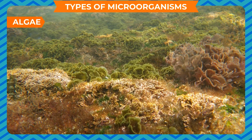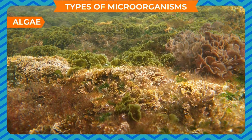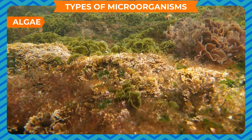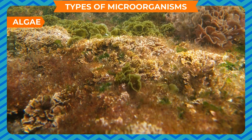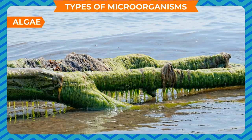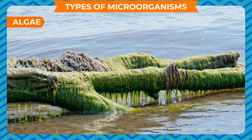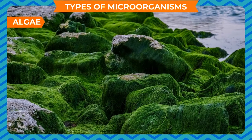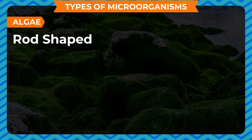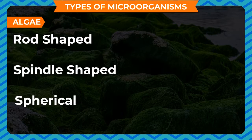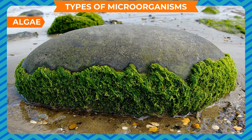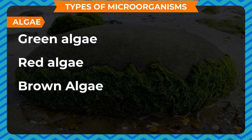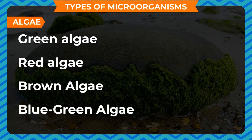Algae (singular: alga) are simple plant-like organisms containing chlorophyll. They are seen floating as a green mass on the surface of stagnant water like lakes or ponds and are capable of preparing their own food owing to the presence of chlorophyll. Algae grow in wet, moist surfaces and may be unicellular, multicellular, filamentous, or branched; rod-shaped, spindle-shaped, or spherical. They contain various pigments and are available in different varieties like green, red, brown, and blue-green algae. Example: Spirogyra and Chlorella.